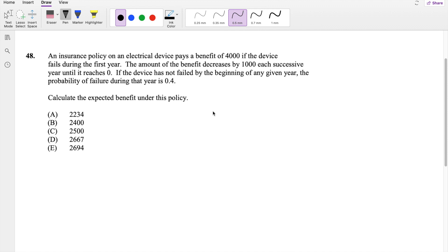In this video, I'll be going over question 48 on SLXNP, so pause the video real quick and try to solve it yourself. Okay, as you can see, let's just dive right into it. So an insurance policy on an electrical device pays a benefit of $4,000 if it fails in the first year.